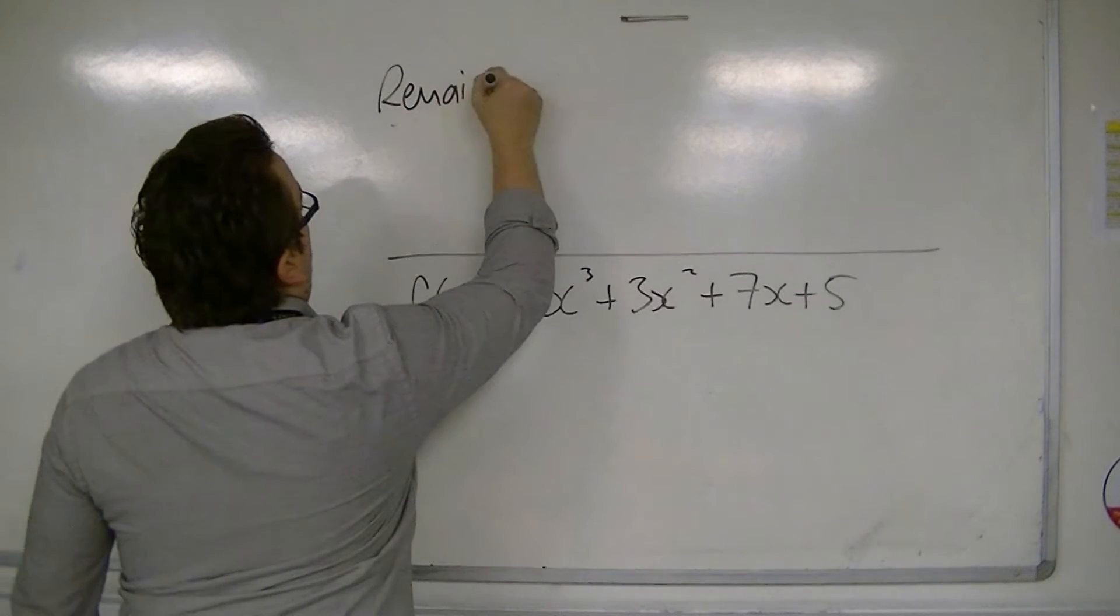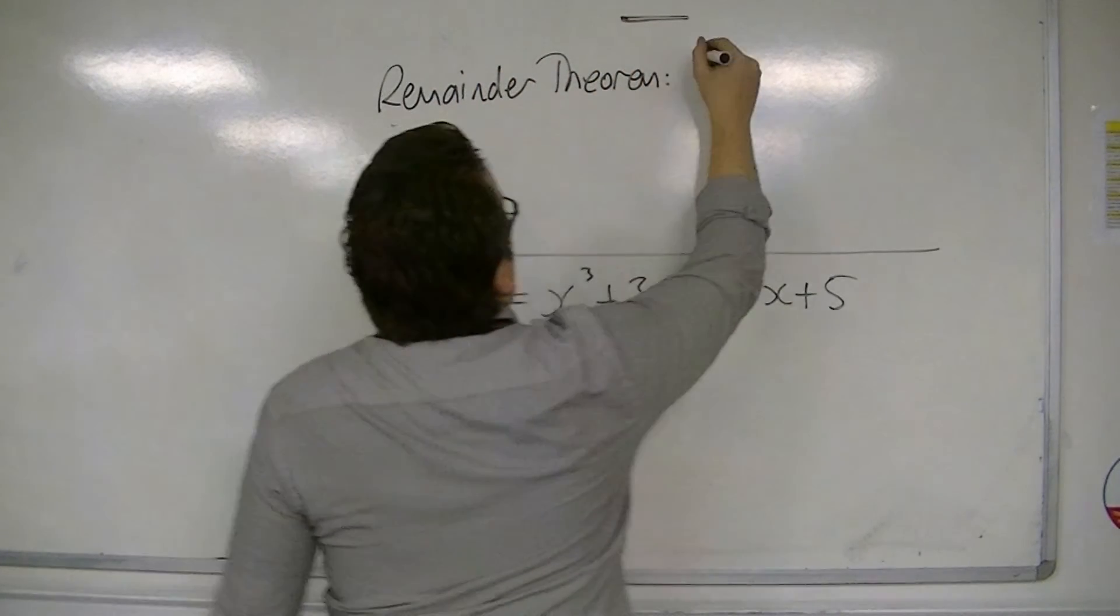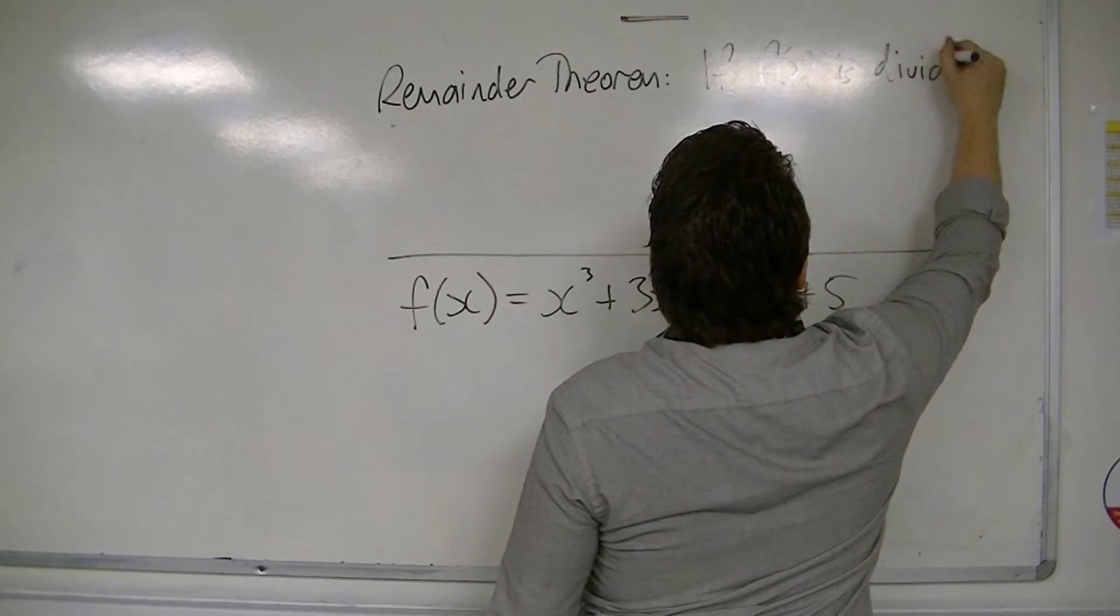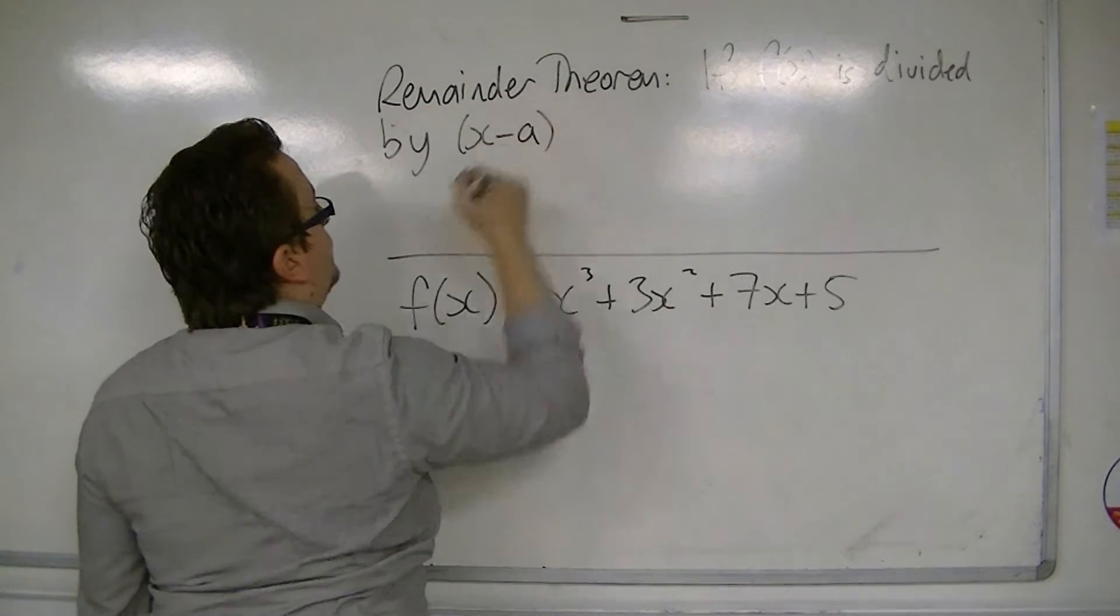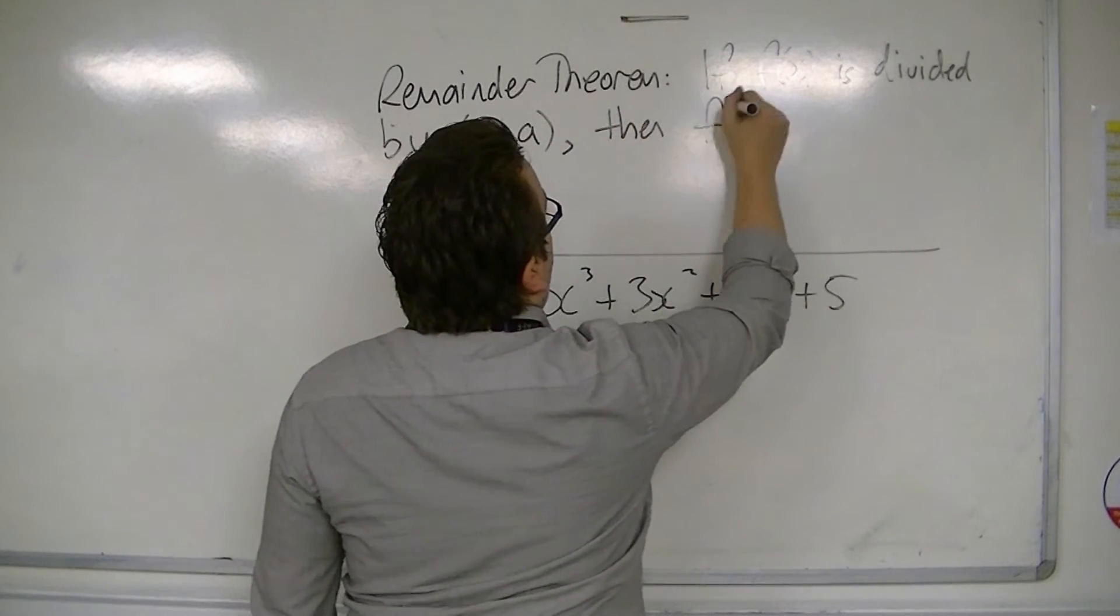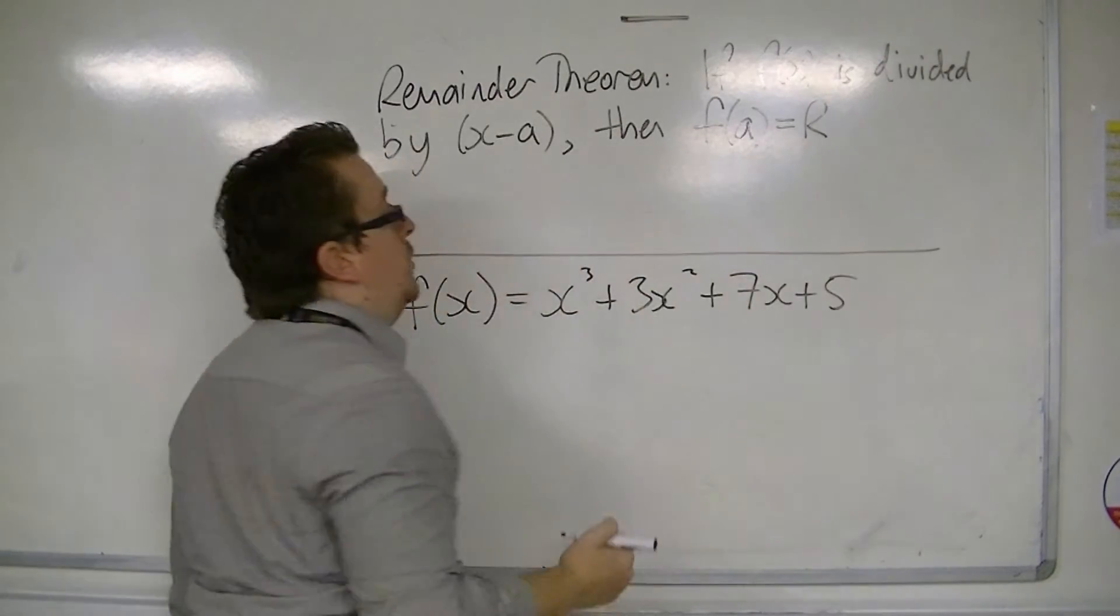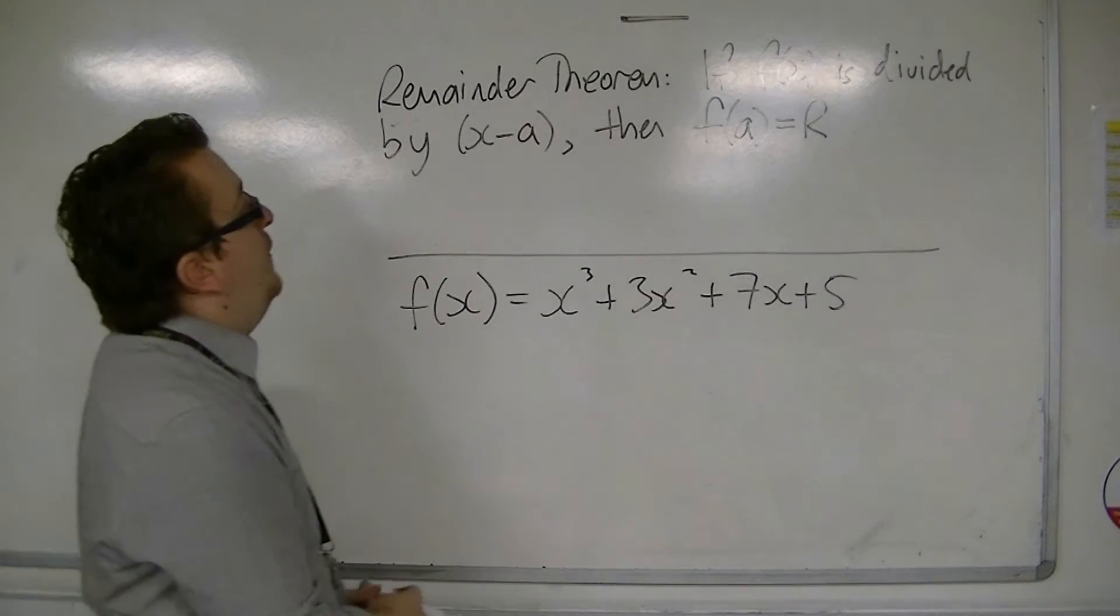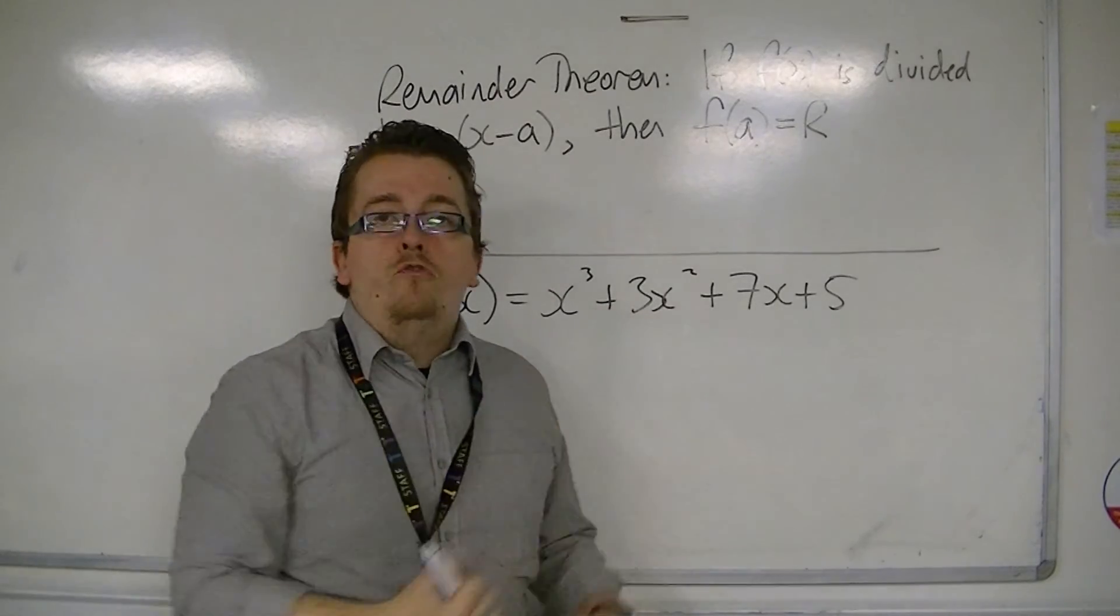So the remainder theorem says that if f(x) is divided by x minus a, then f(a) is equal to the remainder that I get. So if I substitute in the value a, then I get my remainder.